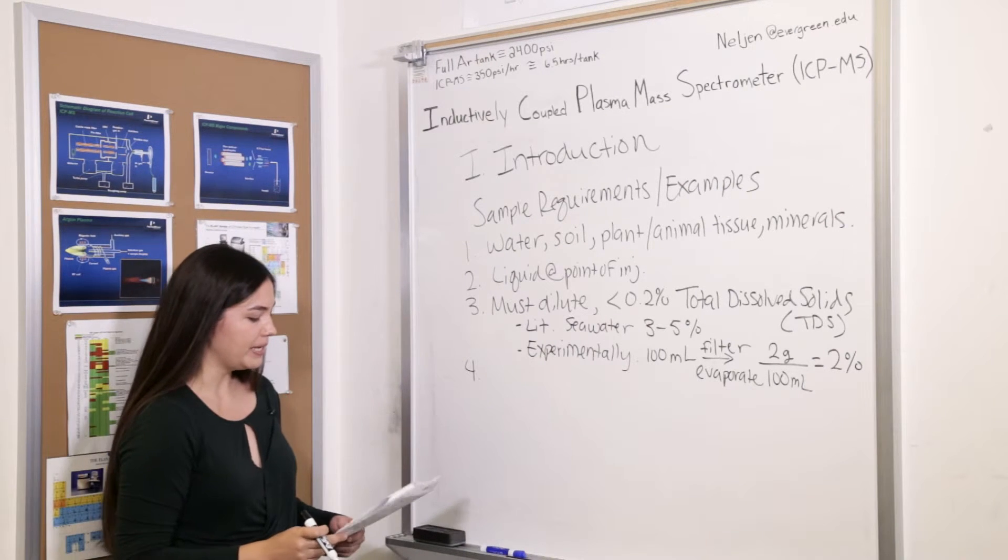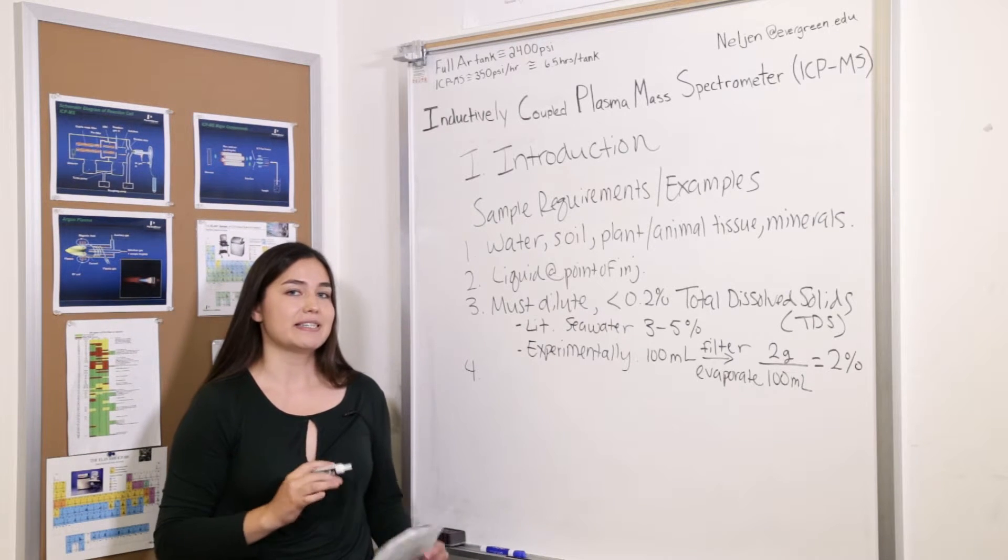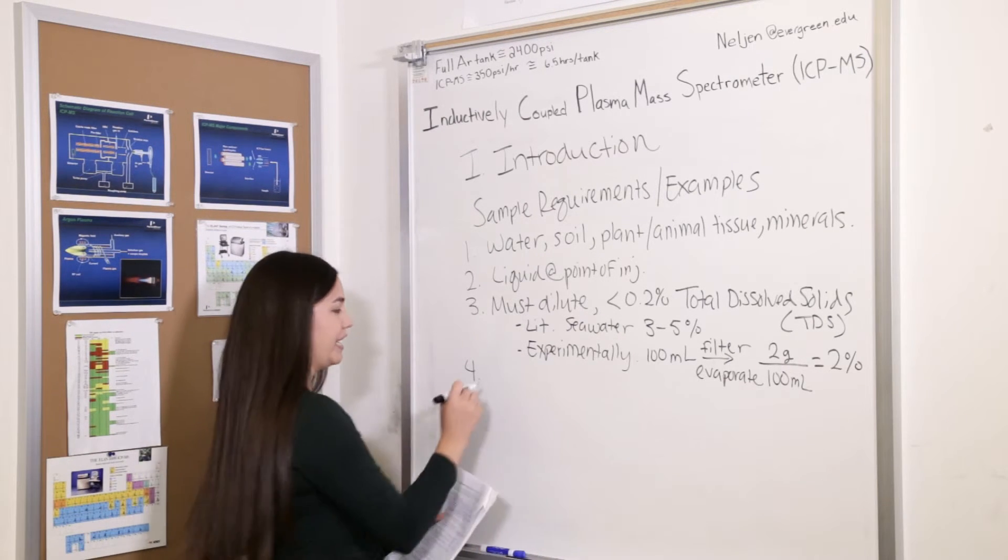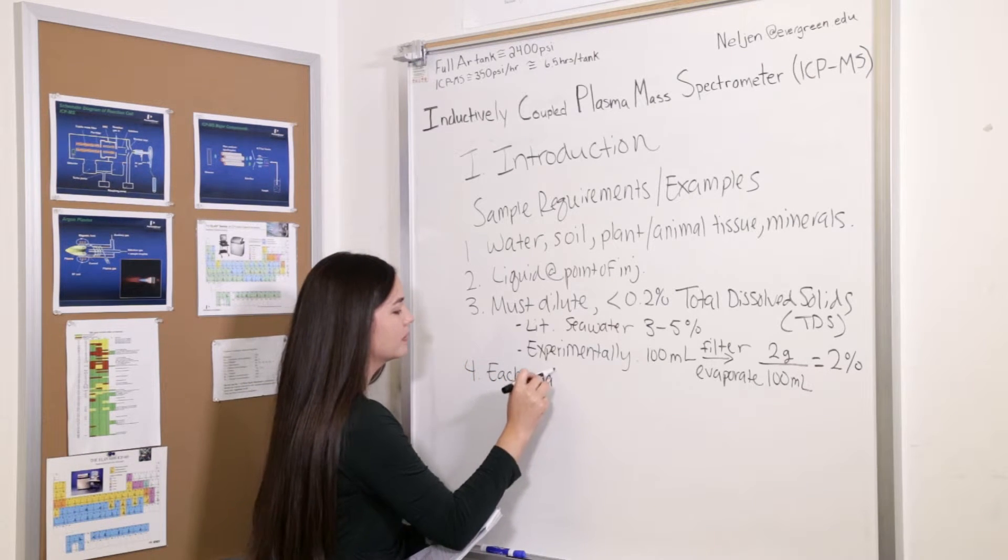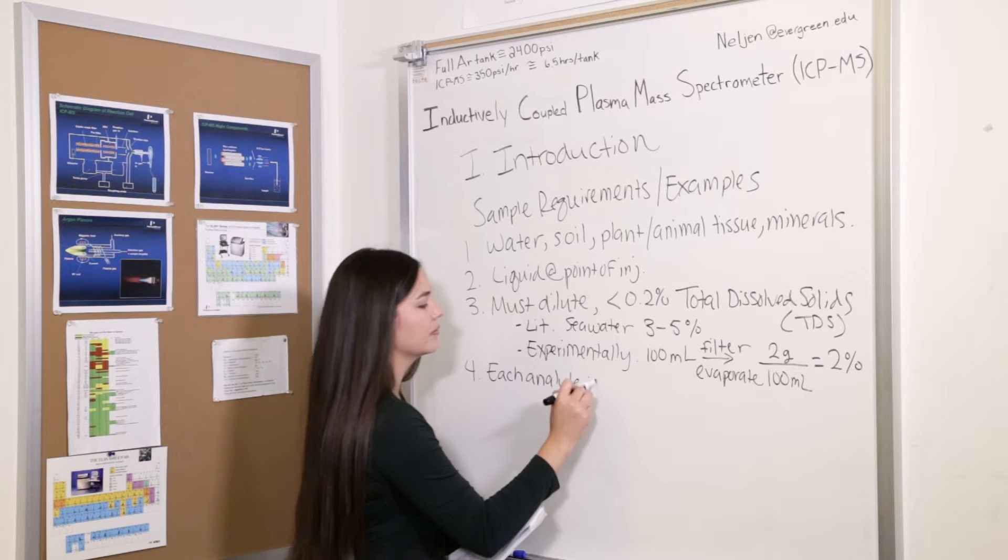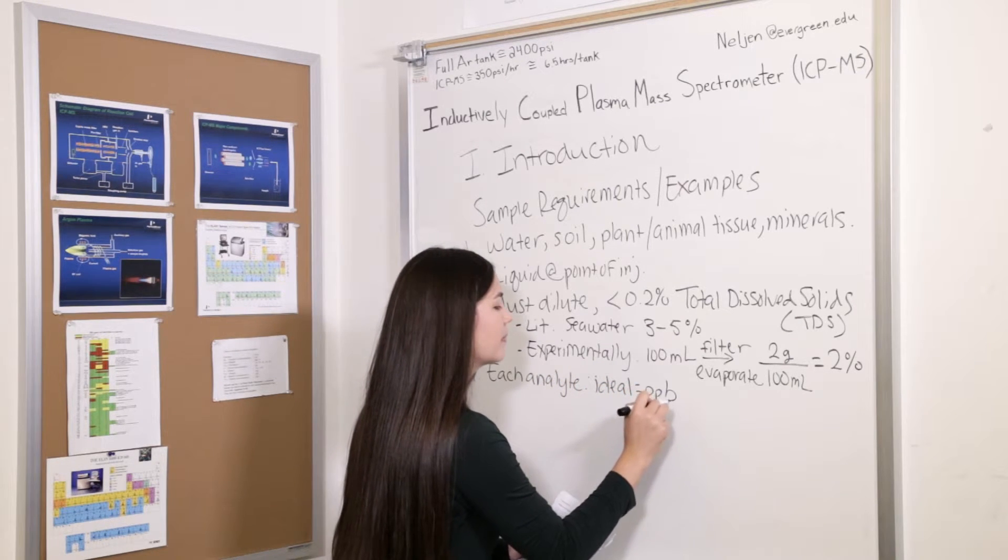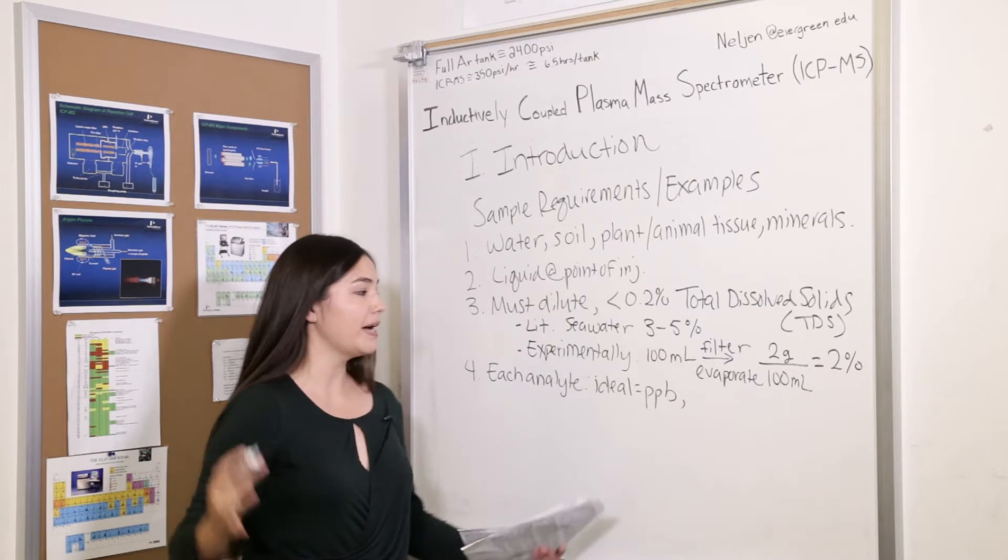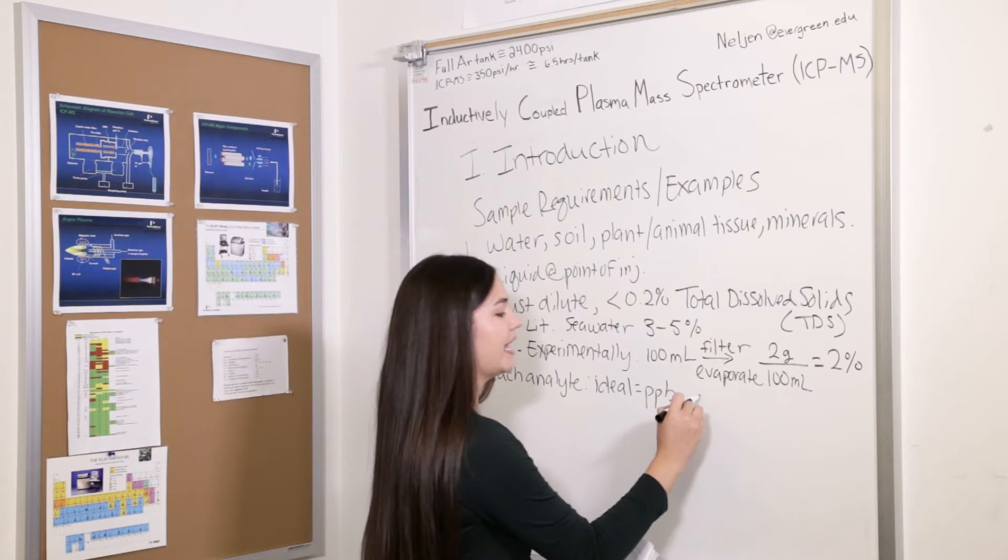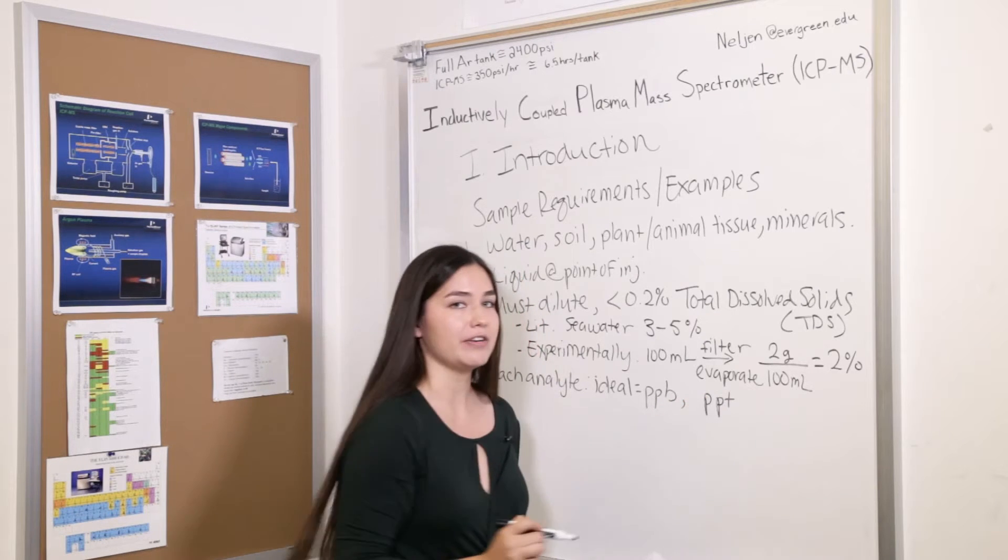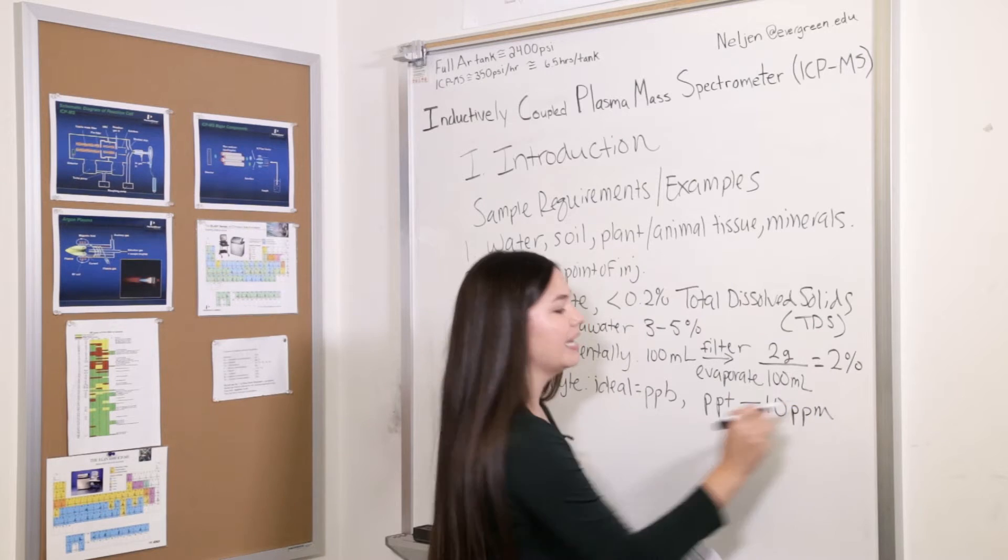Our next sample requirement is that ideally, we want each of our analytes to be in the parts per billion range, but the total range where we can look at each of our analytes can extend from the parts per trillion range up to 10 parts per million as a maximum.